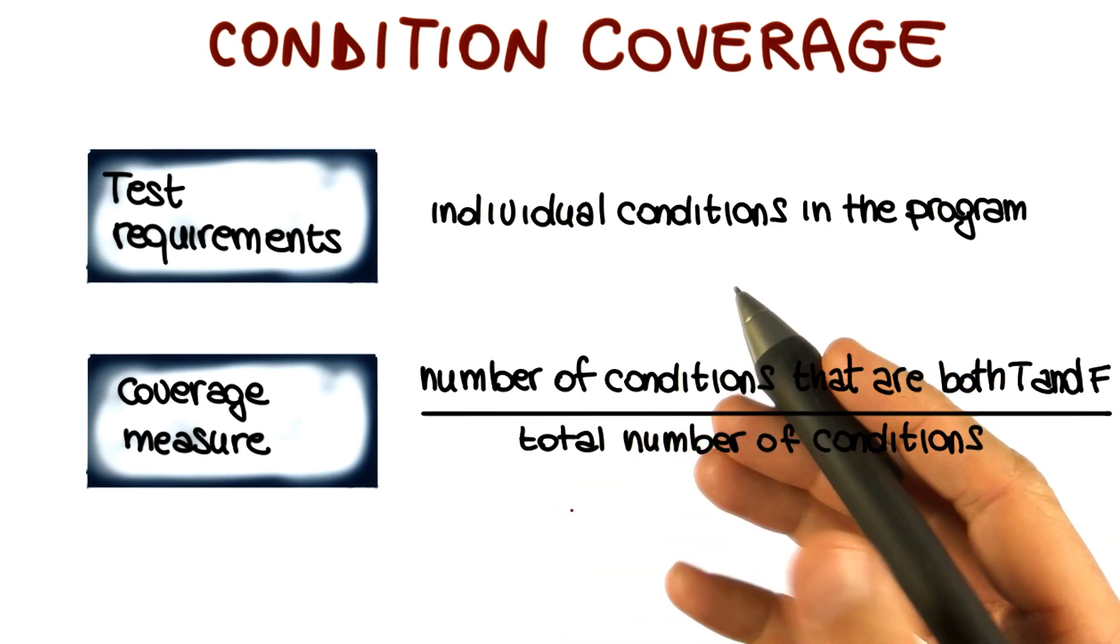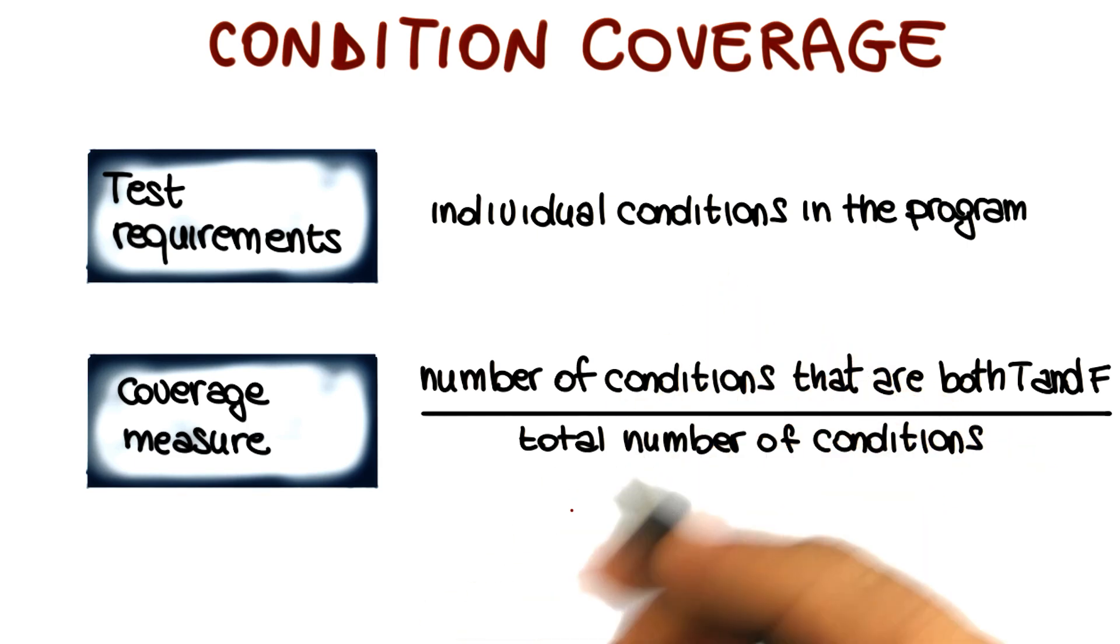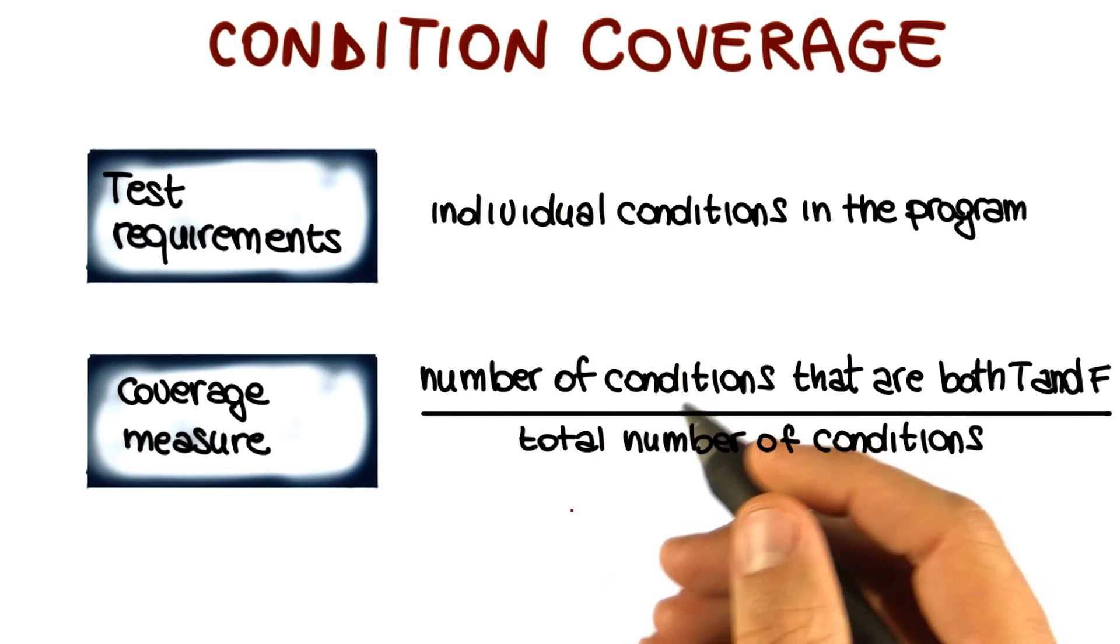Again, if you want to look at this criteria in the form of a question, the question will be: has each boolean subexpression, which means every condition in every predicate, evaluated both to true and false when we run our tests?